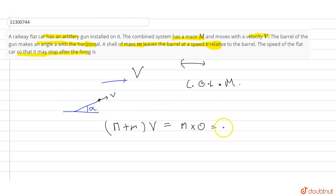And my shell, what is the speed? m v cos alpha - small v, not capital V.